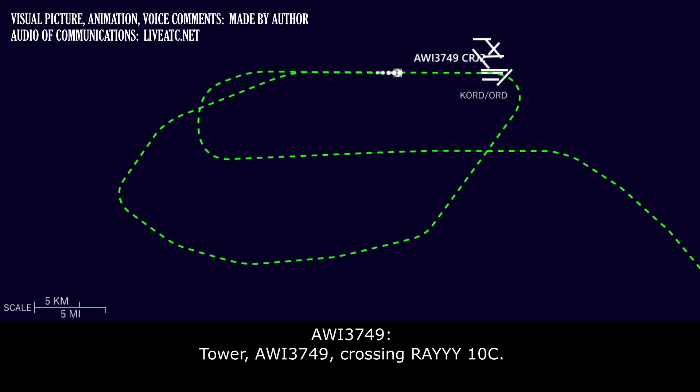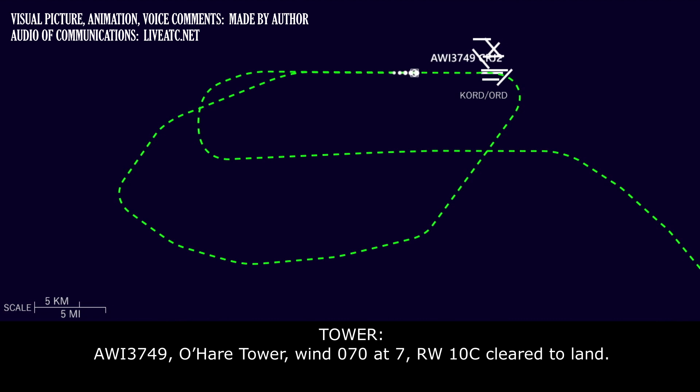Tower, Wisconsin 3749, crossing on 1-0 center. Wisconsin 3749, tower, runway 1-0 center, cleared to land. Cleared to land, runway 1-0 center, Wisconsin 3749.